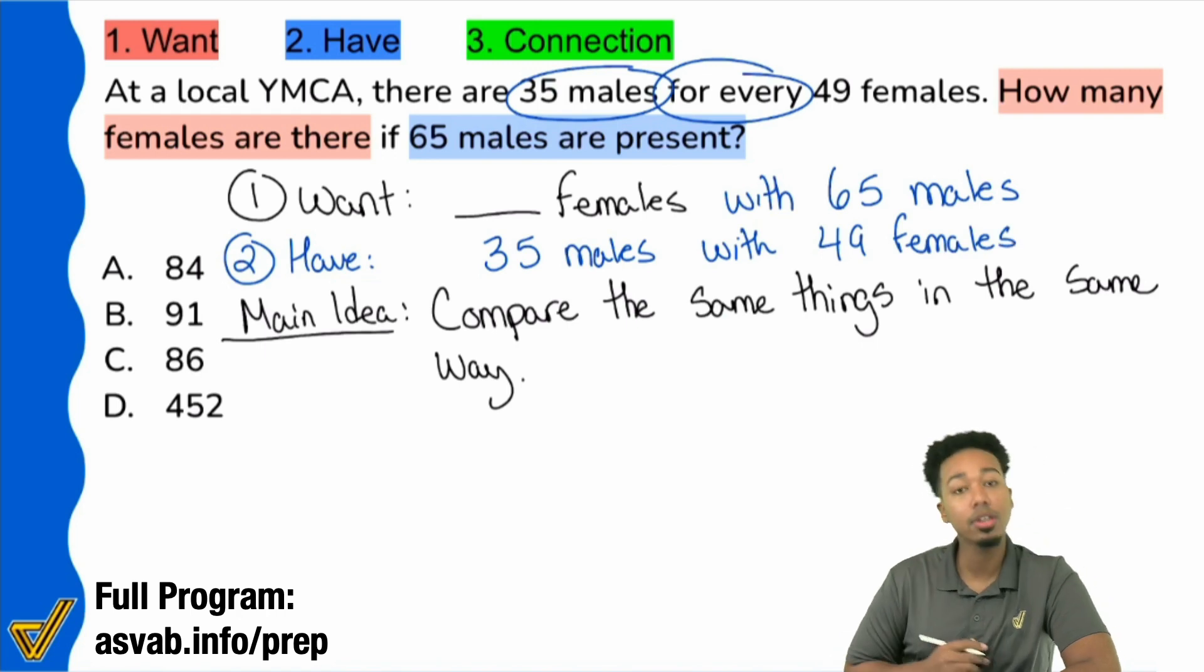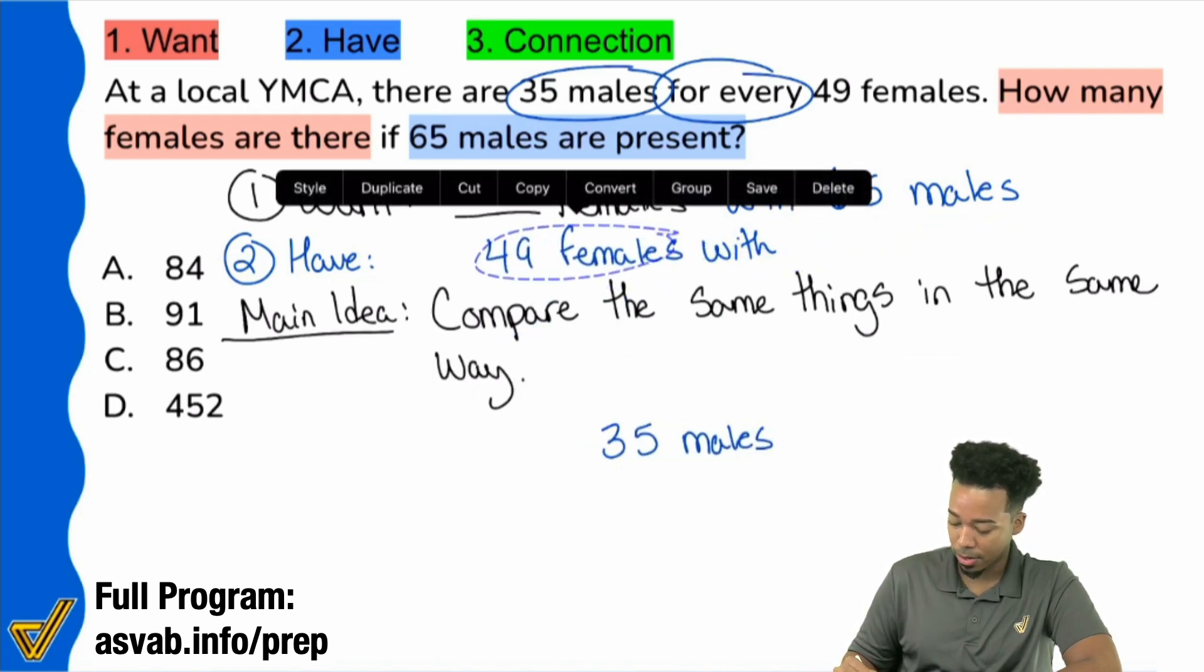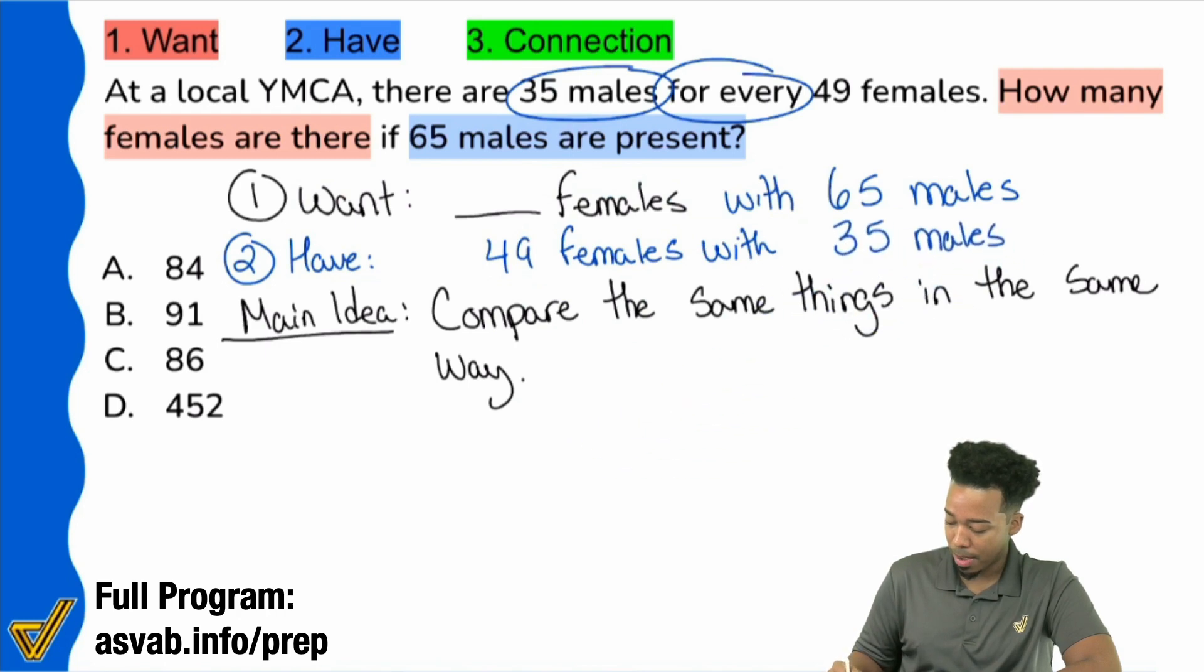And here's why. Here's the main idea that I want you to take a second, write this down on your paper, write this down about proportions. The main idea about proportions, the main idea is that you need to compare the same things in the same way. So compare the same things in the same way, in the same way. This has to be done. If you follow this main idea with proportions, you'll never fail.